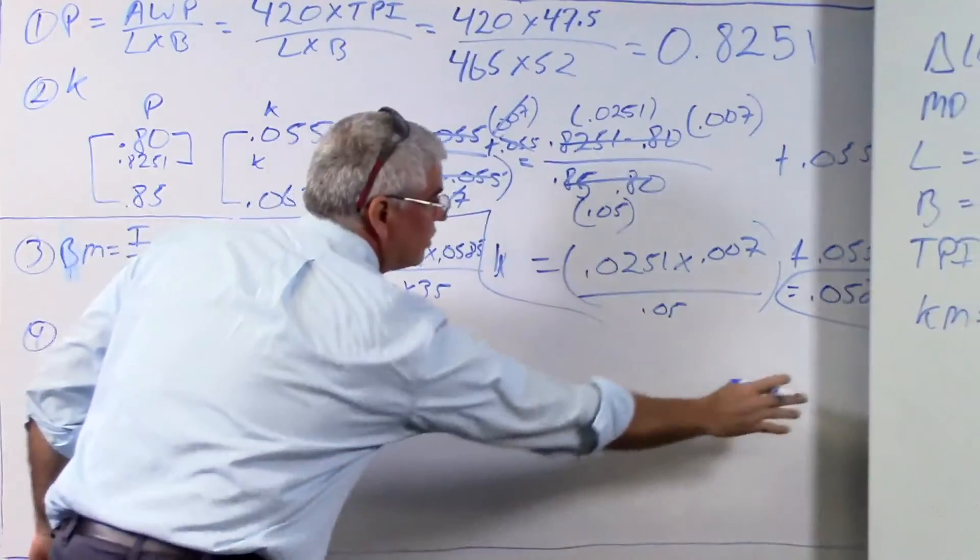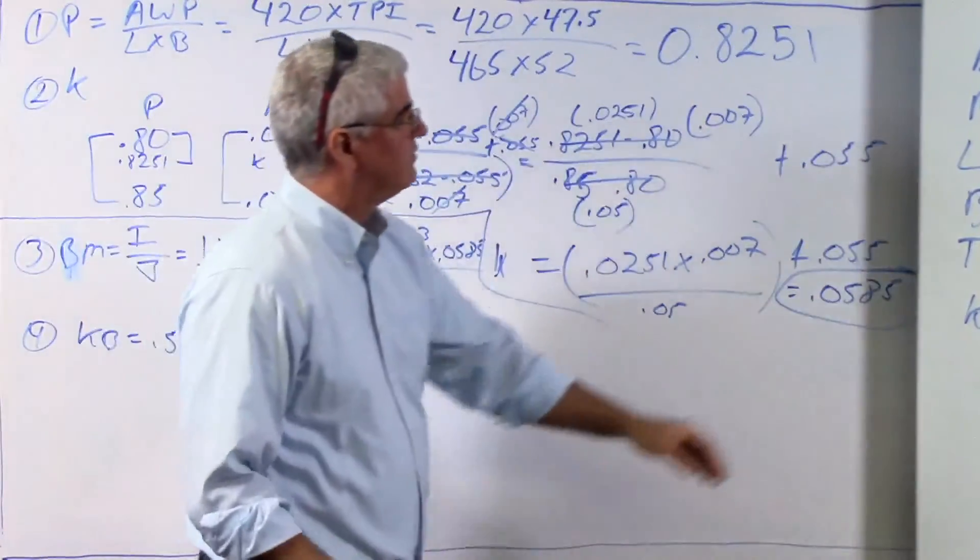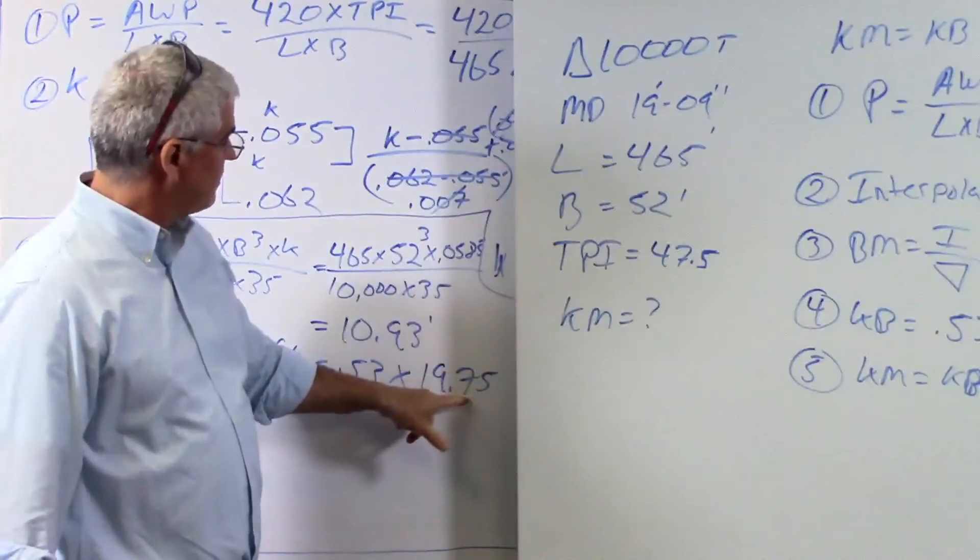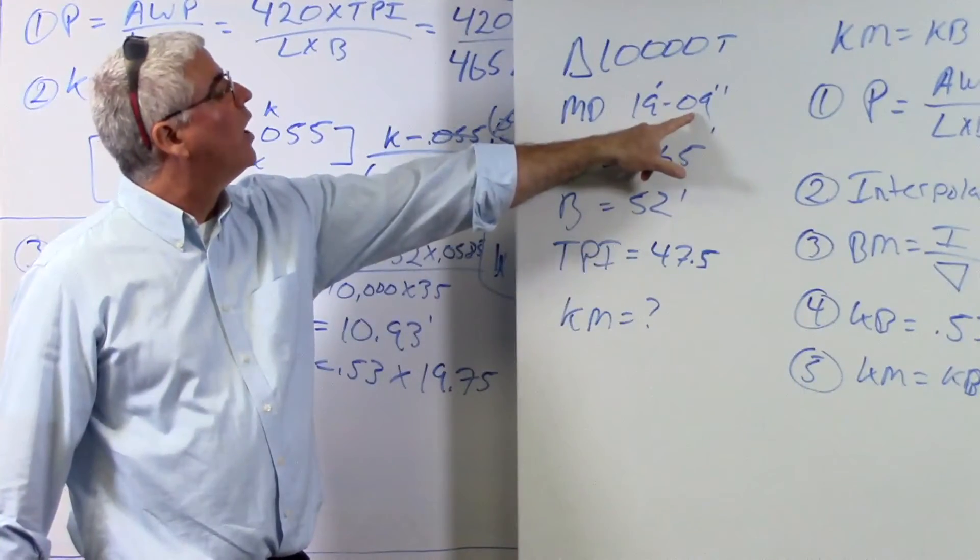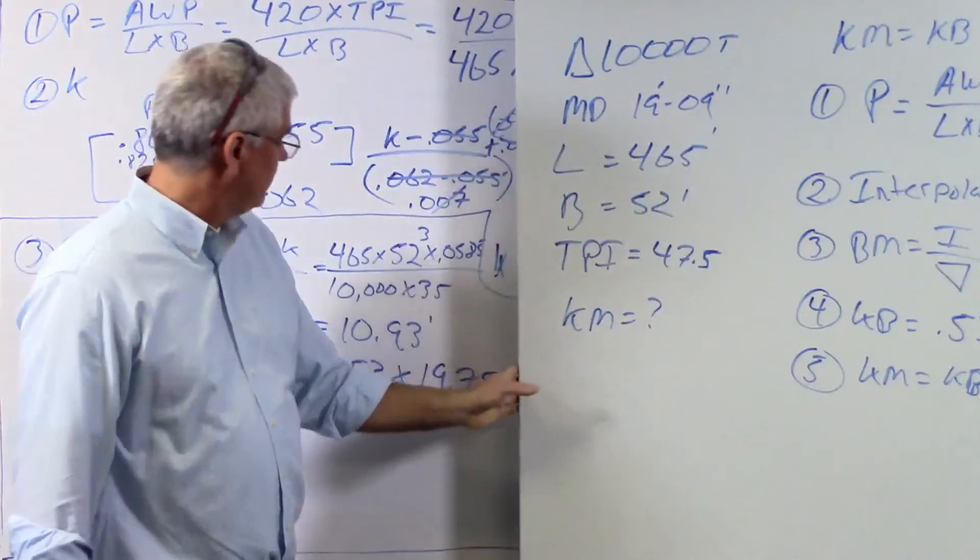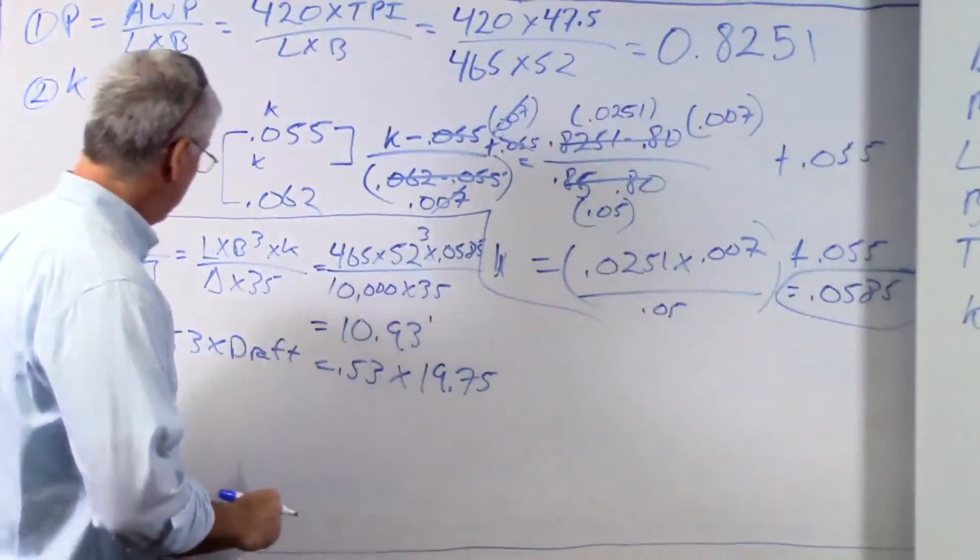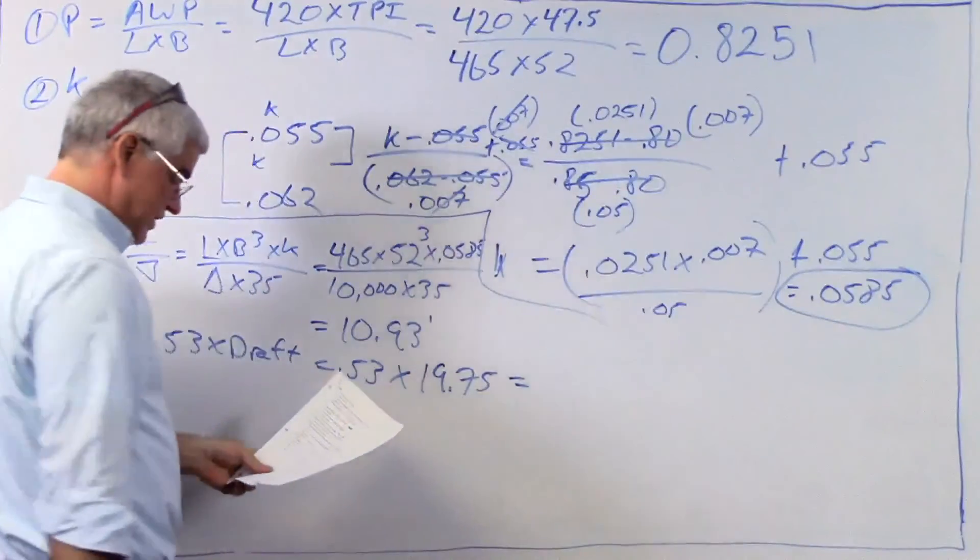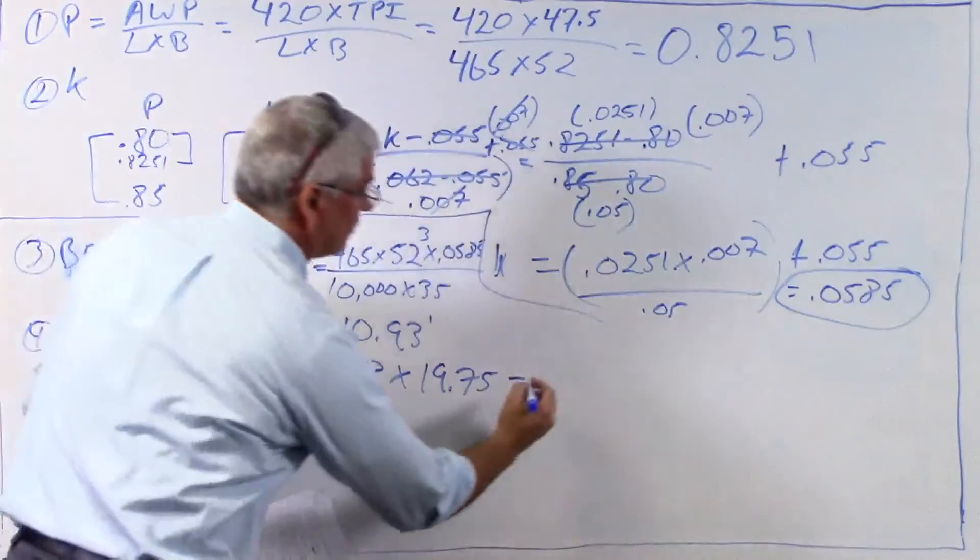If you're not sure how I converted 9 to 0.75, I just divided it by 12. So that converts it from inches to feet. So it's 19.75, which, when I solve, turns out to be 10.93.